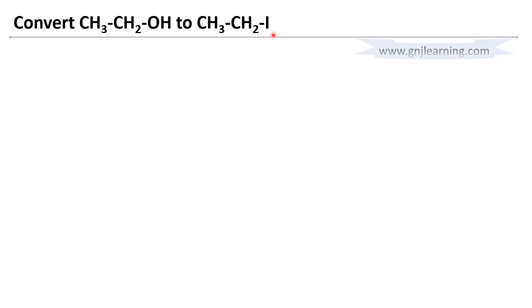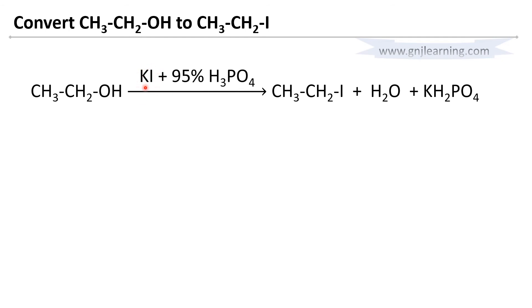We have learned how to substitute the OH group with iodine. Ethanol when treated with potassium iodide or sodium iodide in the presence of 95% orthophosphoric acid (H₃PO₄) gives iodoethane as the main product. We have learned why H₂SO₄ cannot be used here. The OH group is replaced by iodide, and H₂O and KH₂PO₄ are formed as byproducts. You should know the main product; the byproduct may sometimes be specifically asked.